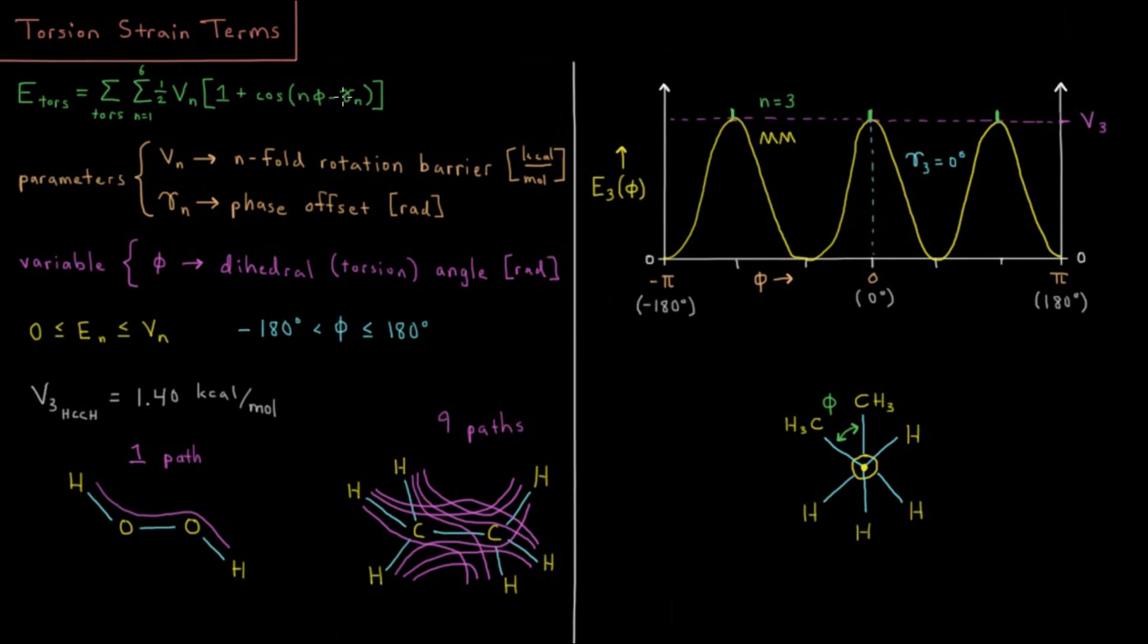Then we have gamma, which is the phase offset of this. We can imagine maybe we want this minimum to be somewhere else and we can offset it by changing the value of gamma.